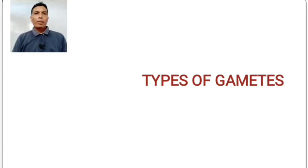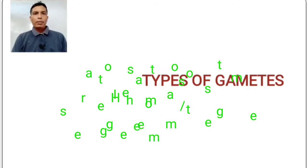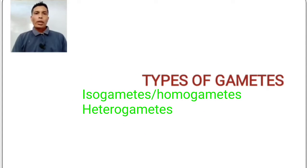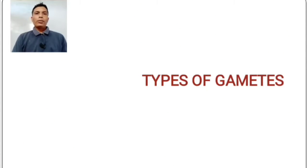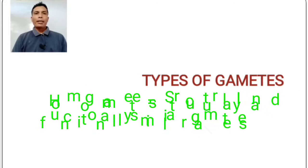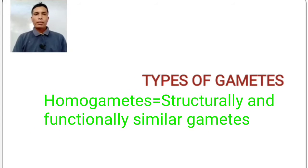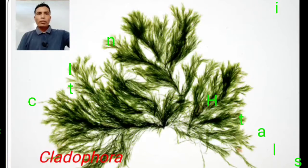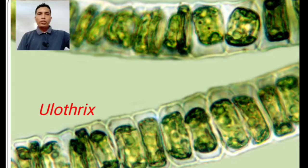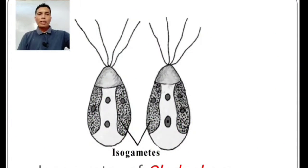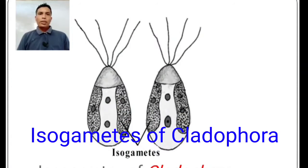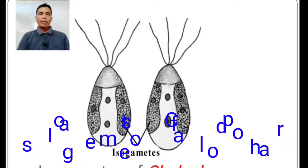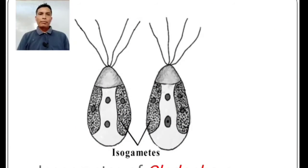Now, types of gametes. Gametes can be divided into two types: isogametes or homogametes, and heterogametes. Structurally and functionally similar male and female gametes are called homogametes or isogametes. Examples are Cladophora and Ulothrix. In Cladophora, the male gametes and female gametes cannot be easily distinguished because they are very similar.